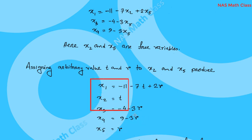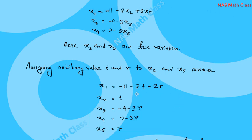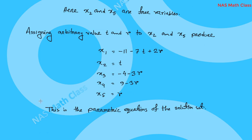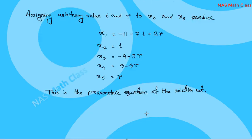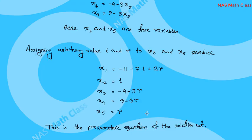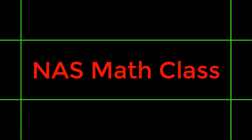The position of the system shows two possible outcomes. This parametric equation is the solution set.